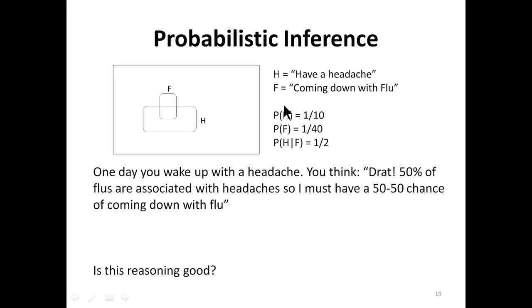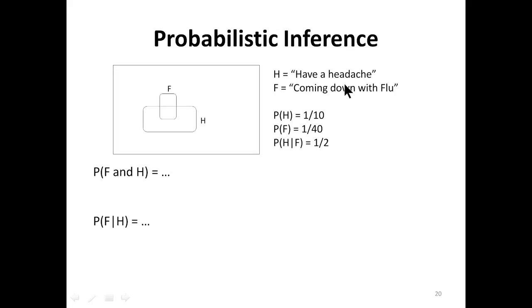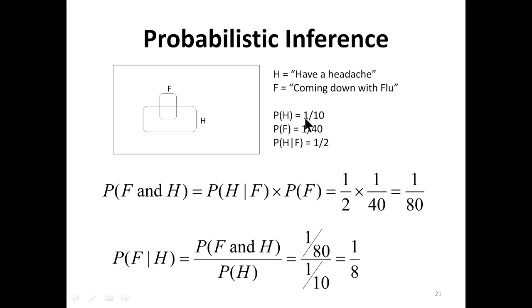For probabilistic inference: one day you wake up with a headache and think there's a 50% chance of flu associated with a headache — is this reasoning good? Having a headache is 1 over 10, flu is 1 over 40, and the conditional probability is 1 over 2. So probability of F and H equals the conditional probability multiplied — 1 over 2 times 1 over 40 equals 1 over 80. The conditional probability of flu given headache is 1 over 80 divided by 1 over 10. Probabilistic inference is very powerful.